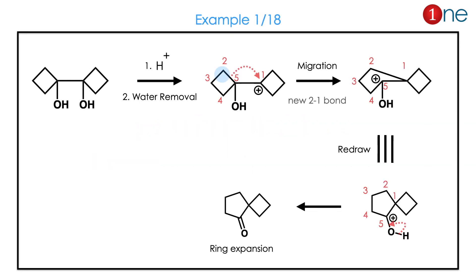Let us look at the first problem. You have a cyclic ring diol. When you use the acid, it forms the cation. The ring will open and ring expansion happens. The single-bonded compound becomes a spiro compound. The ring expansion leads to a 5-membered and 4-membered ring. The final product is a ketone. I have given numbers for easy understanding — better practice yourself.